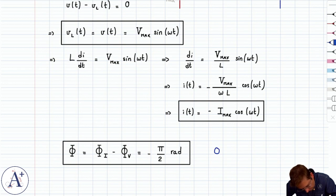And so if you rewrite this, if you write φ_i, well then you get that it's φ_v minus π/2.